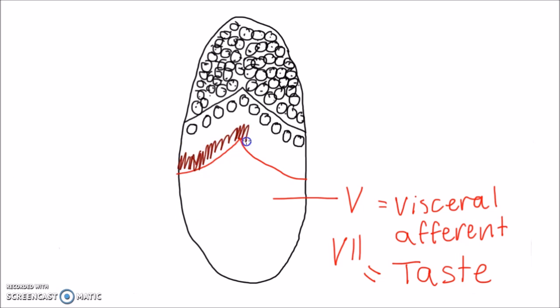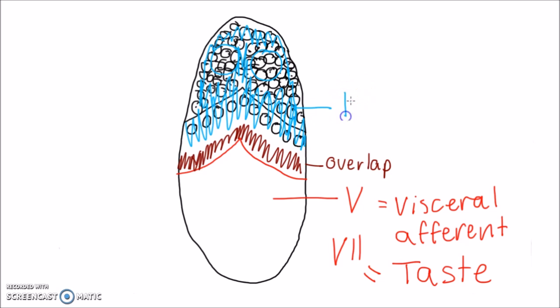9 overlaps a bit just anterior to the circumvallate papillae, but covers almost all of the rest of the tongue with both visceral afferent and special sensation, taste.